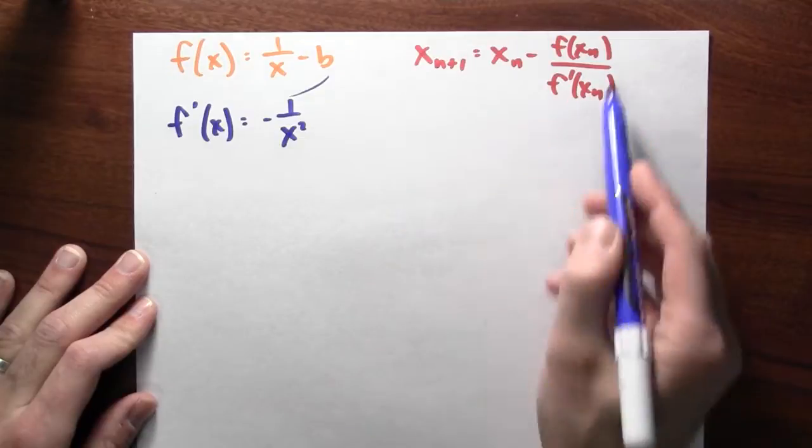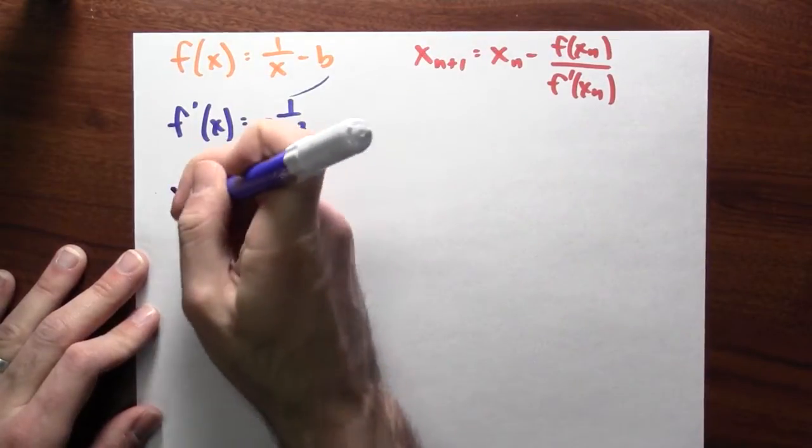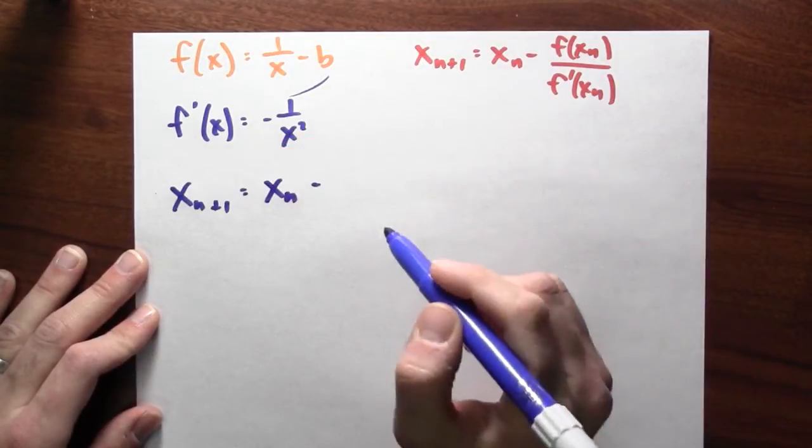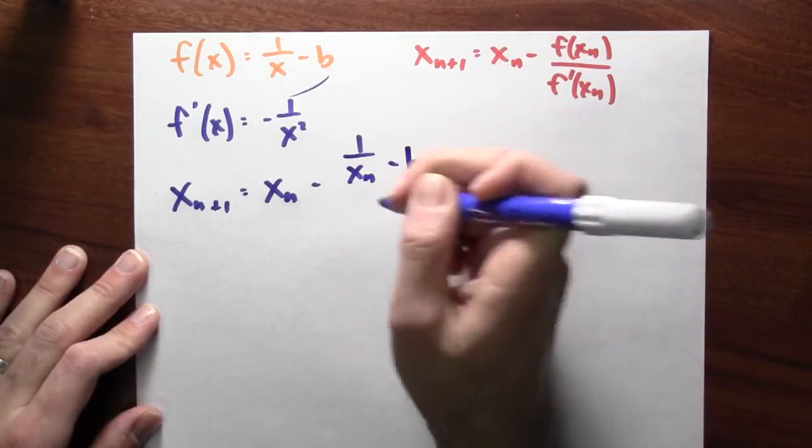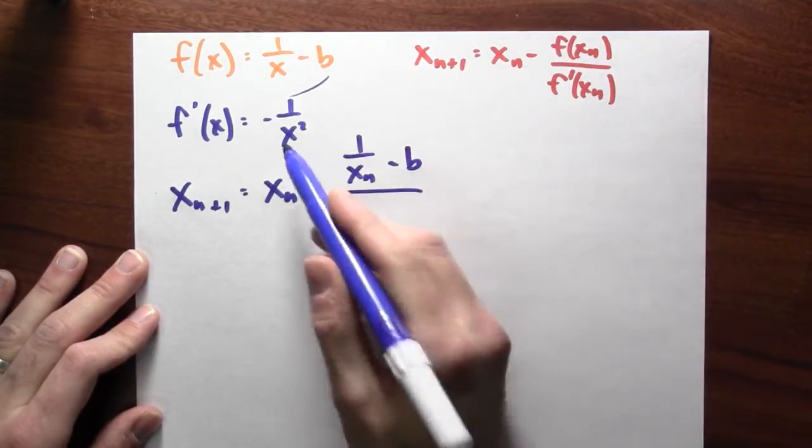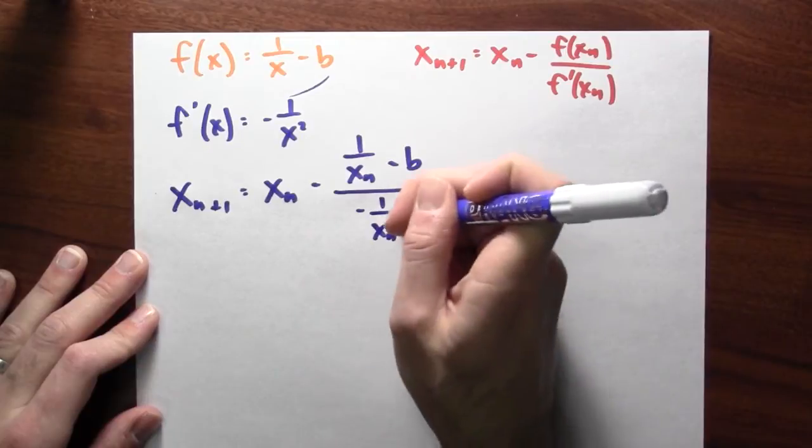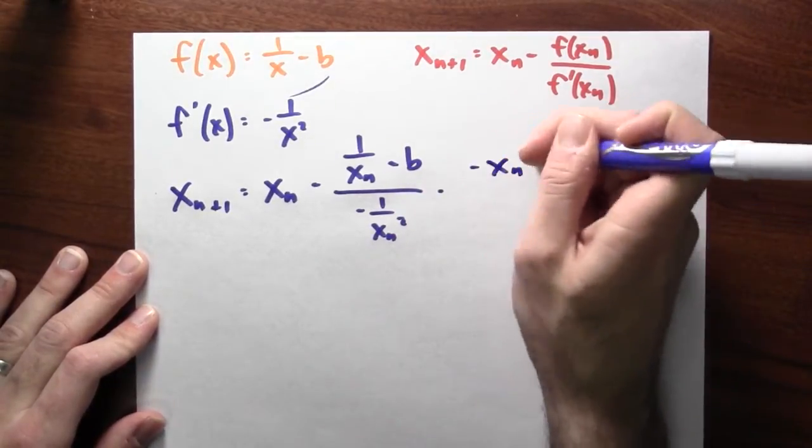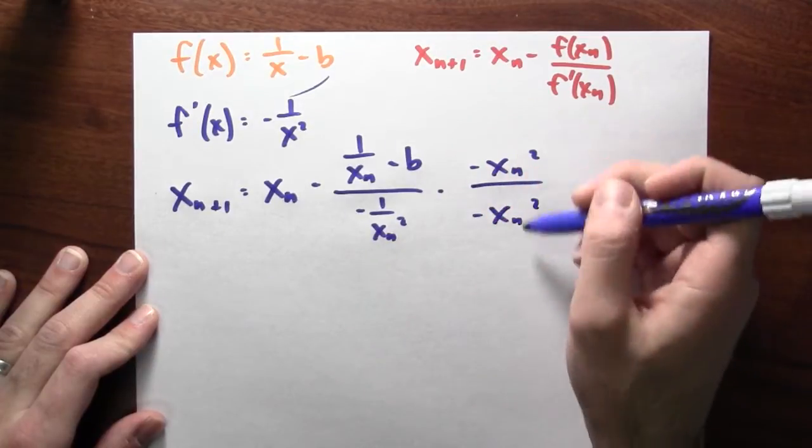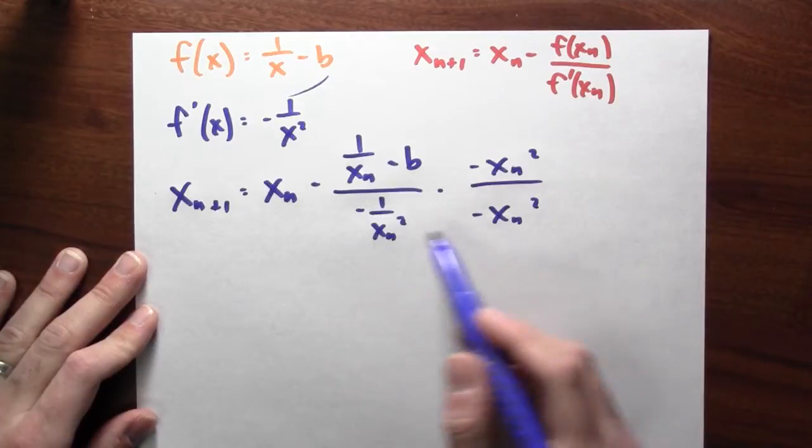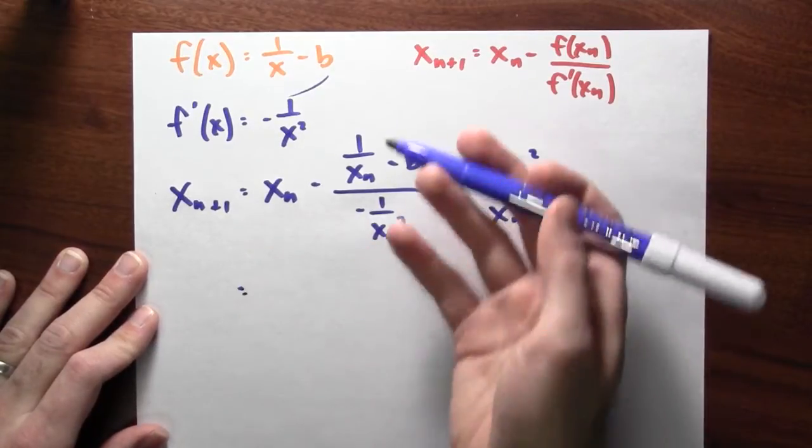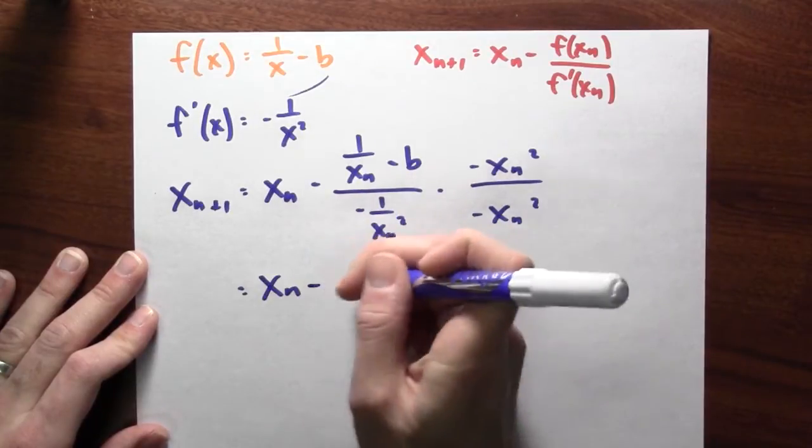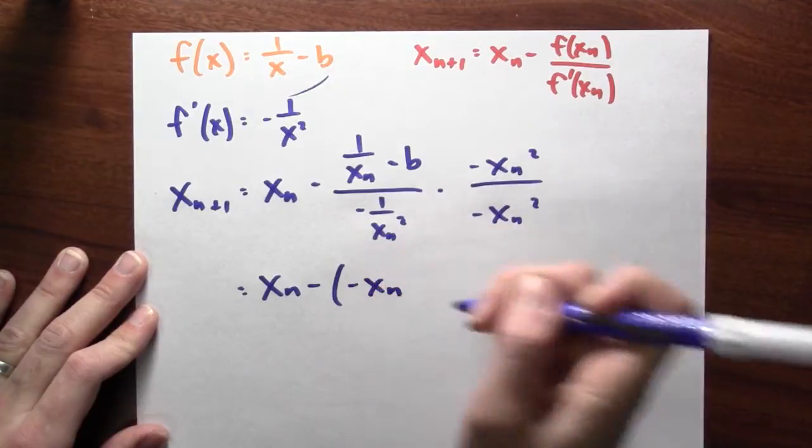Now I'll use that to try to make this Newton's method formula look a little bit nicer. So x sub n plus 1 is x sub n minus the function evaluated at x sub n, which is 1 over x sub n minus b divided by the derivative evaluated at x sub n, which is minus 1 over x sub n squared. Now to kill off this denominator, let's just multiply by minus x sub n squared divided by minus x sub n squared. That's just a sneaky version of 1, but it manages to kill off the denominator. Now simplify this a bit. I've got x sub n. I've got minus x sub n squared times 1 over x sub n. That leaves me with a minus x sub n.